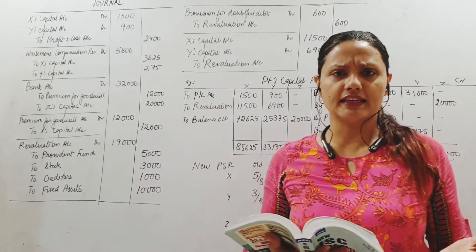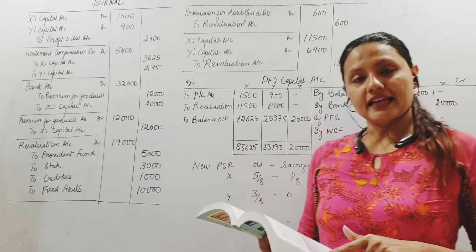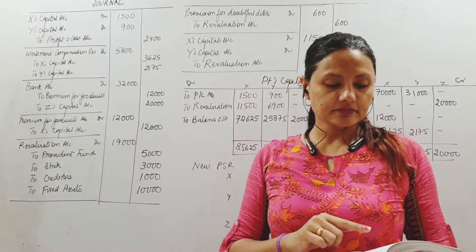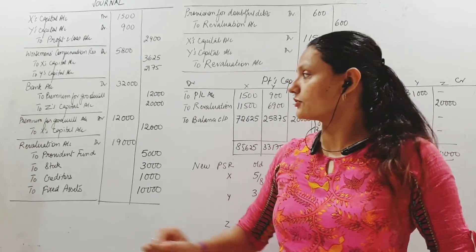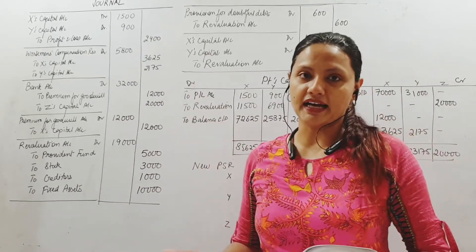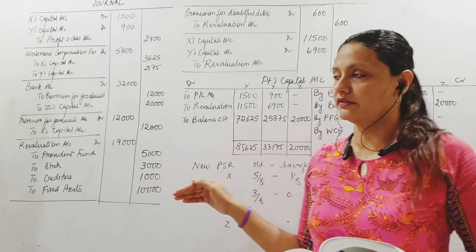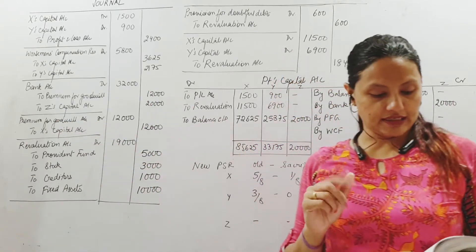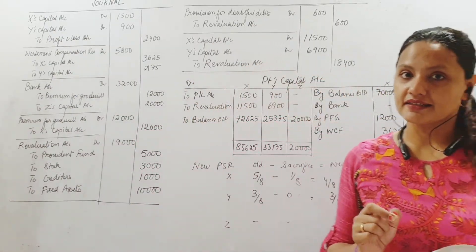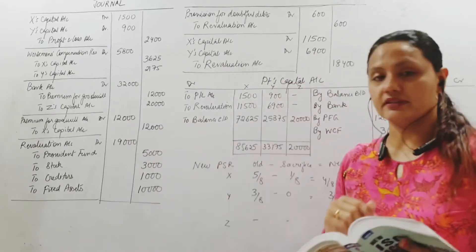The new partner Z is admitted with a 1/8 share, bringing in 20,000 as capital and 12,000 for goodwill in cash — that's 32,000 total. Debit bank account 32,000; credit Z's capital 20,000 and premium for goodwill 12,000. For distribution of PFG: Z acquires his share entirely from X, so the entire PFG of 12,000 goes to X. Debit premium for goodwill 12,000, credit X's capital 12,000.